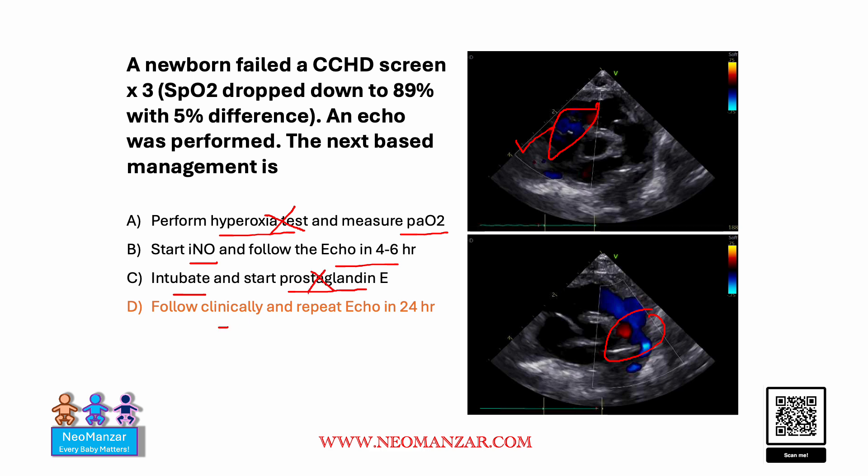So this is a mild TR with a bi-directional shunt. The patient should be observed, and an echo in 24 hours will be an appropriate plan. I hope you all have learned something together today — have a wonderful day.